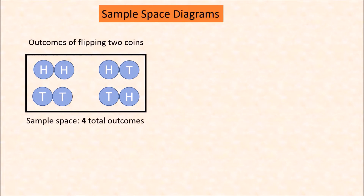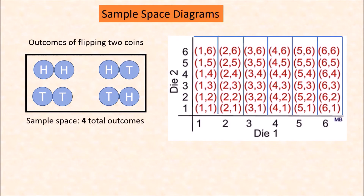Independent events means they do not affect each other, and dependent events means the outcome depends on the outcome of the first event. There are several ways to show outcomes of an event. One is by simple listing. If we have very few outcomes, like flipping a coin — a coin only has two sides, giving us only two outcomes. If you have two coins, that gives us two times two, or four outcomes, so we can list them.